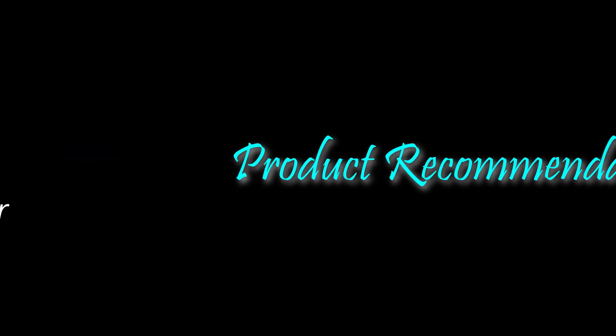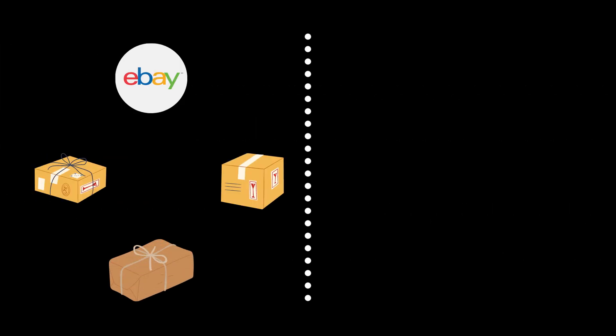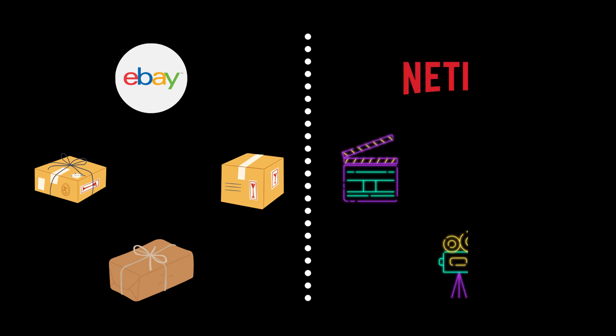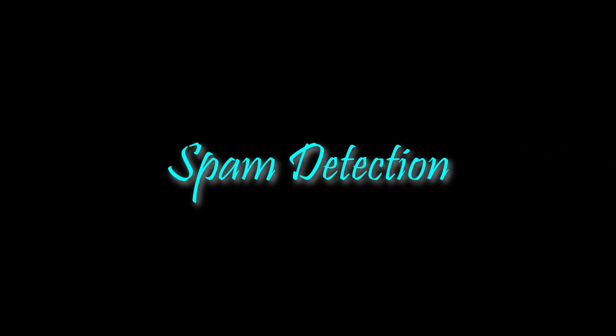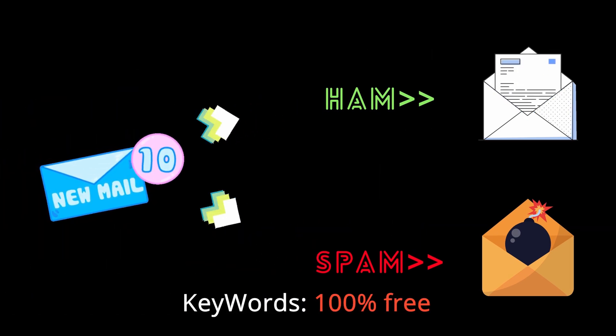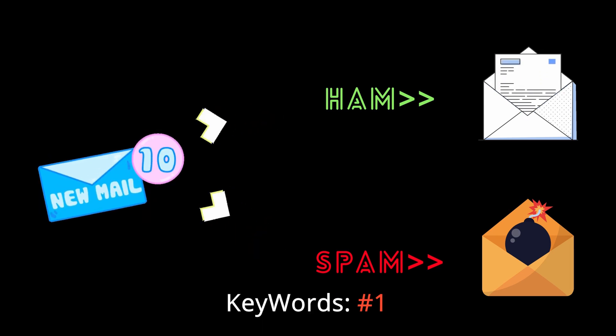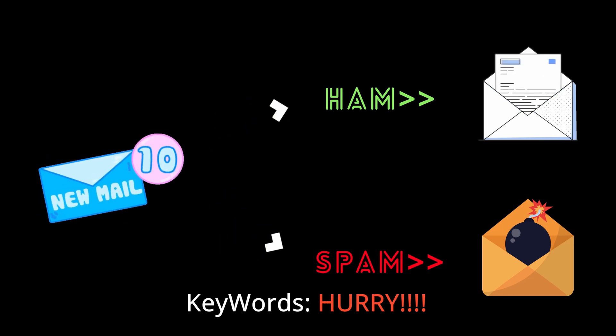Product recommendation: ever wondered how you get similar product suggestions on Amazon or other e-commerce applications? The websites identify your browsing patterns and suggest similar products based on your interest. This is similarly the case with entertainment recommendation systems such as Netflix and YouTube — the algorithm learns your interests based on the videos you watch and suggests videos you may like. Spam detection: machine learning algorithms use potential keywords to scan emails and identify if they are spam, automatically flagging and moving malicious emails to the spam folder.